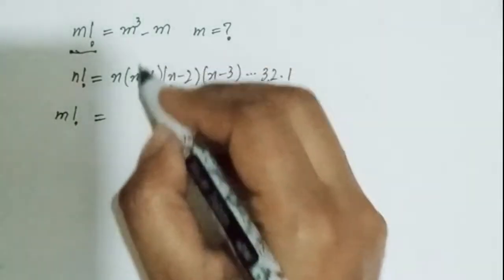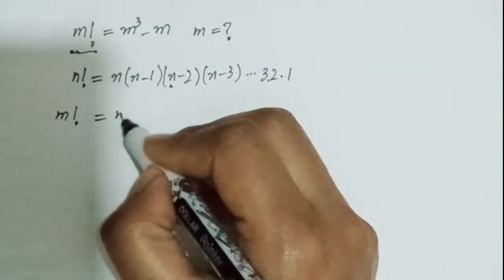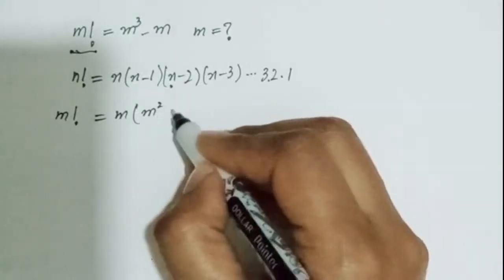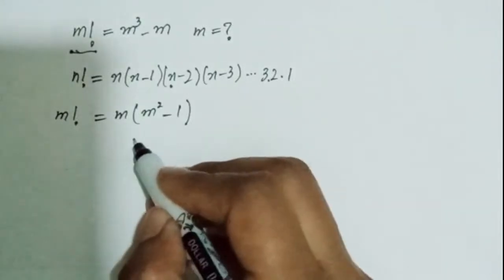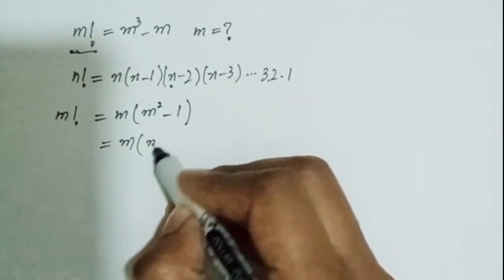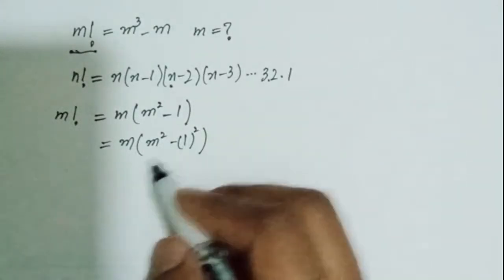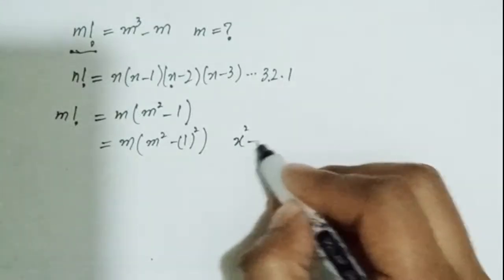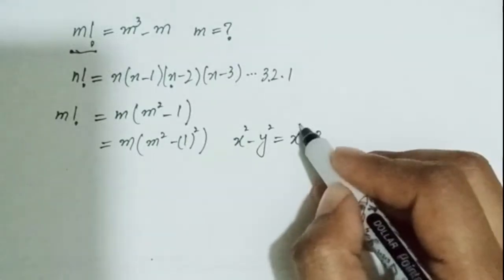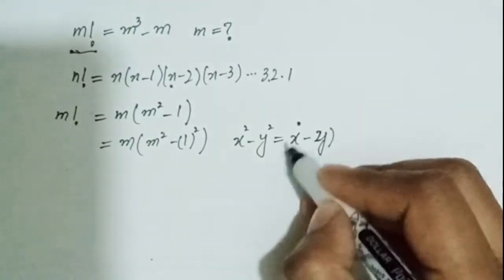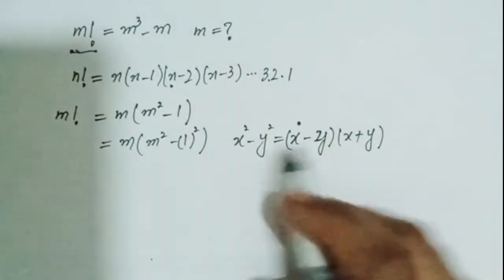m factorial is equal to m cubed minus m. I can take out common factor m, leaving m squared minus 1. This can be written as m squared minus 1 squared, so I can use the difference-of-squares identity: x squared minus y squared equals (x minus y)(x plus y).